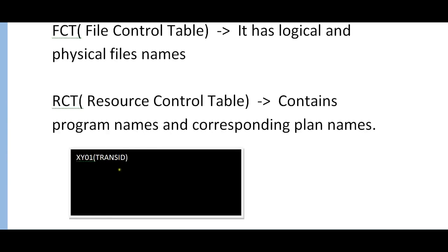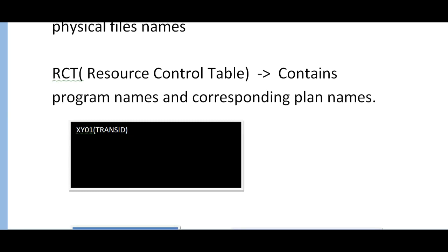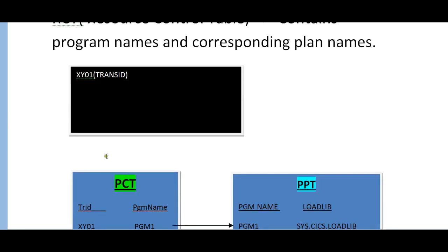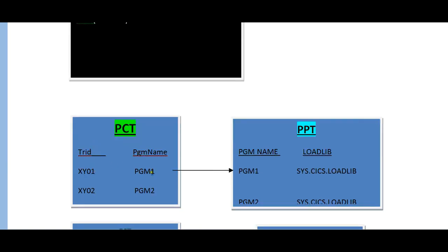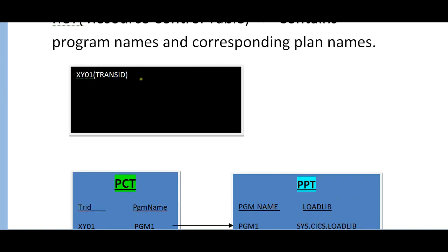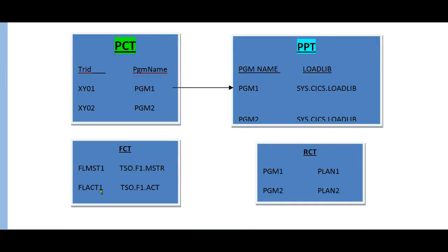Assuming I have entered the online screen and typed my transaction ID XY01 in the top-left corner and hit Enter — CICS goes to the PCT table and searches for transaction ID XY01, finds its corresponding program, then searches for the load library in the PPT — if available, your map gets initiated and displays on the screen. Similarly, FCT has the logical name (the DD name from your JCL) and physical file name; RCT has the plan name and program name for DB2 programs.